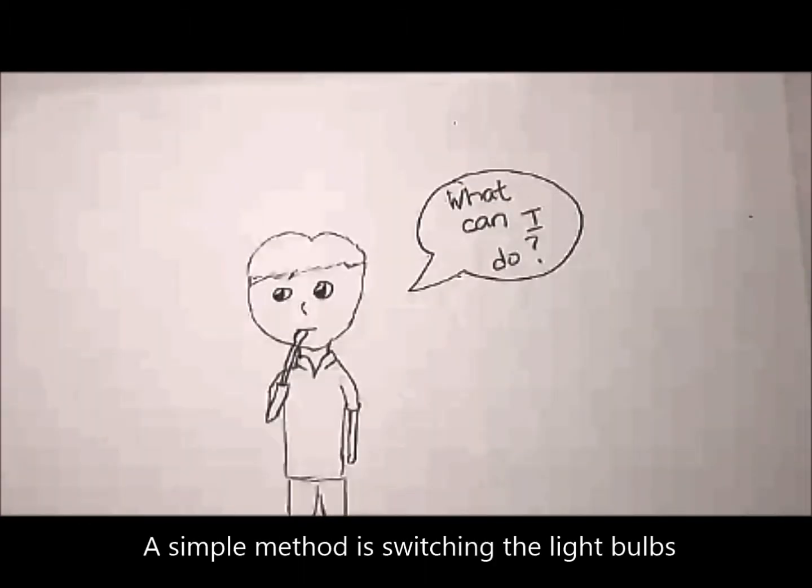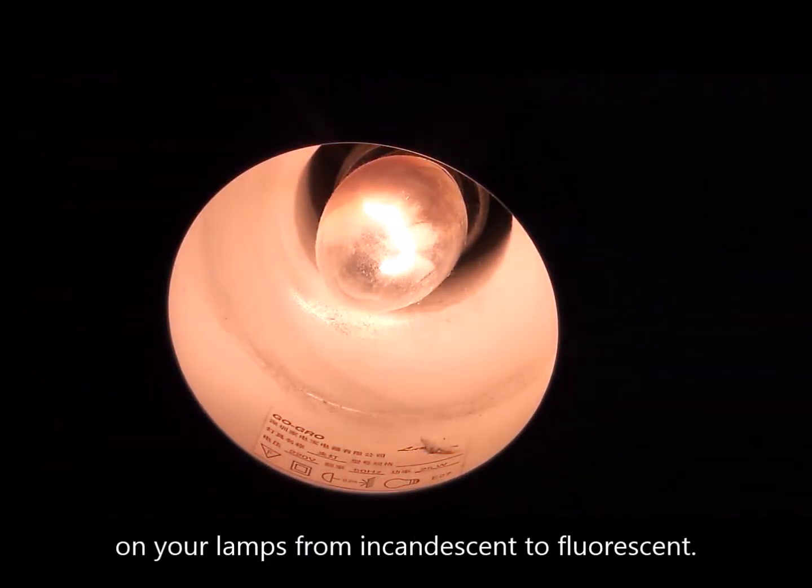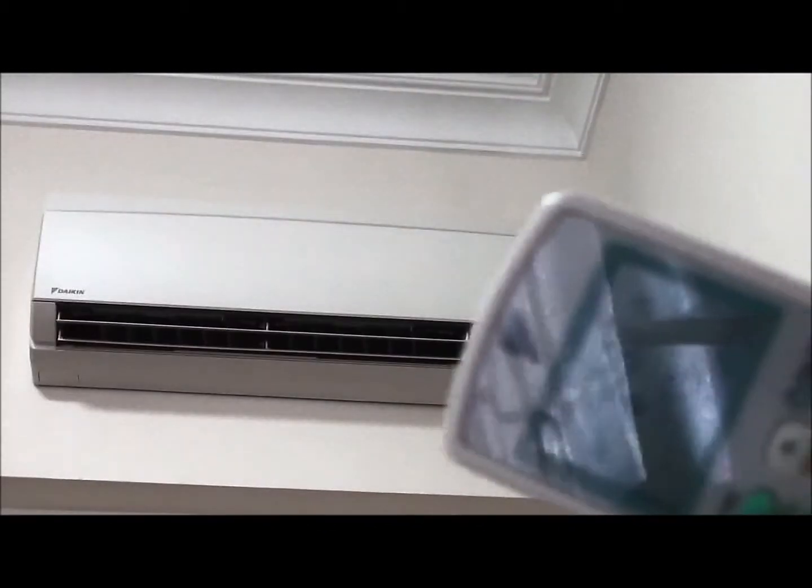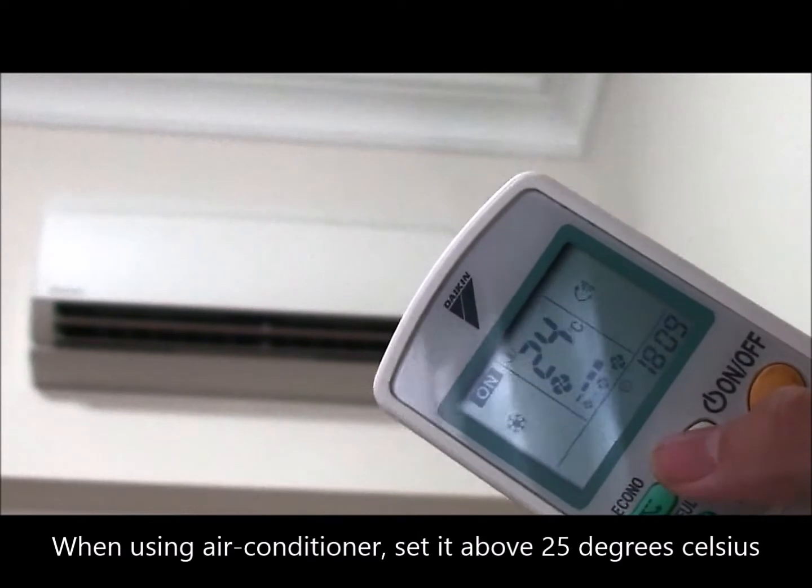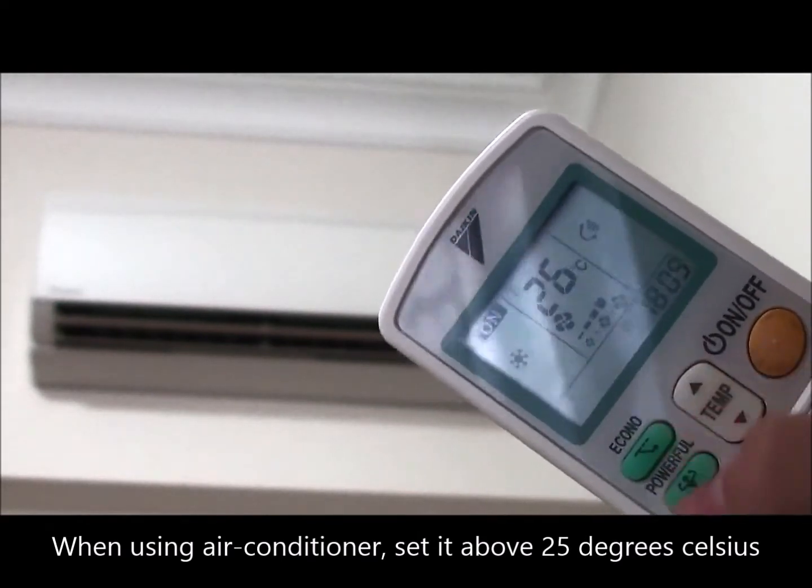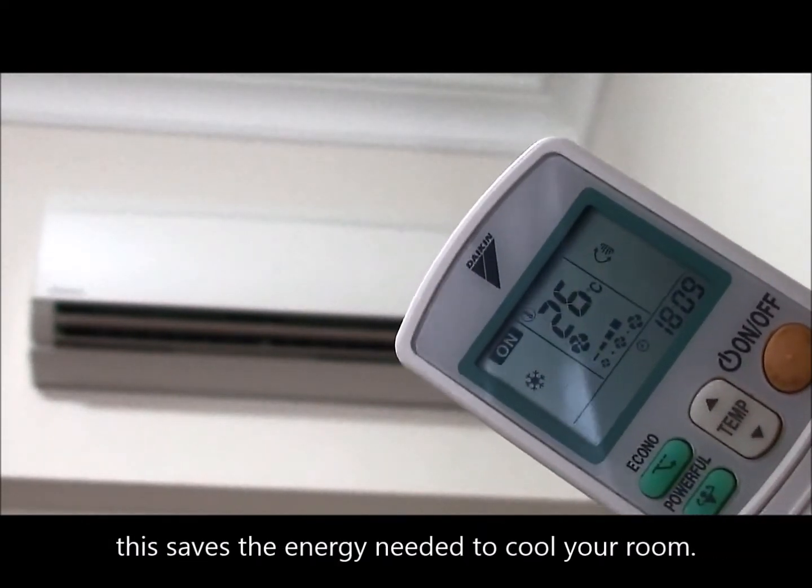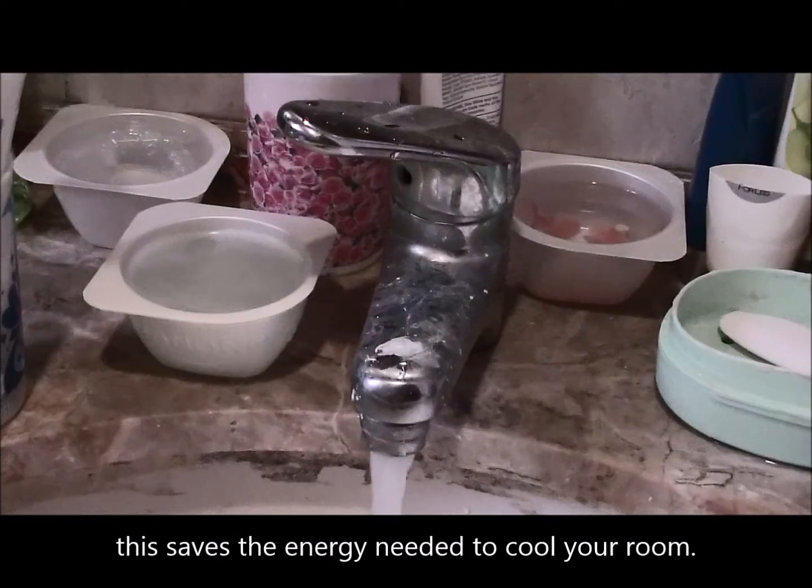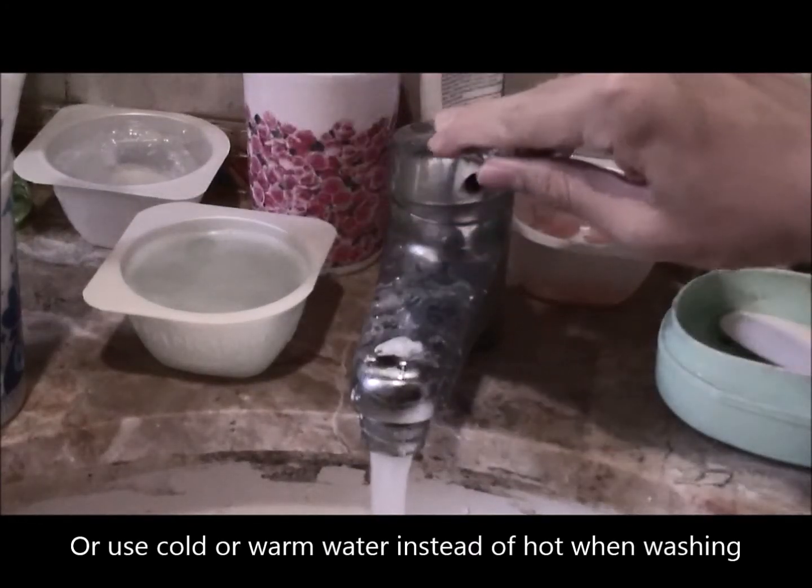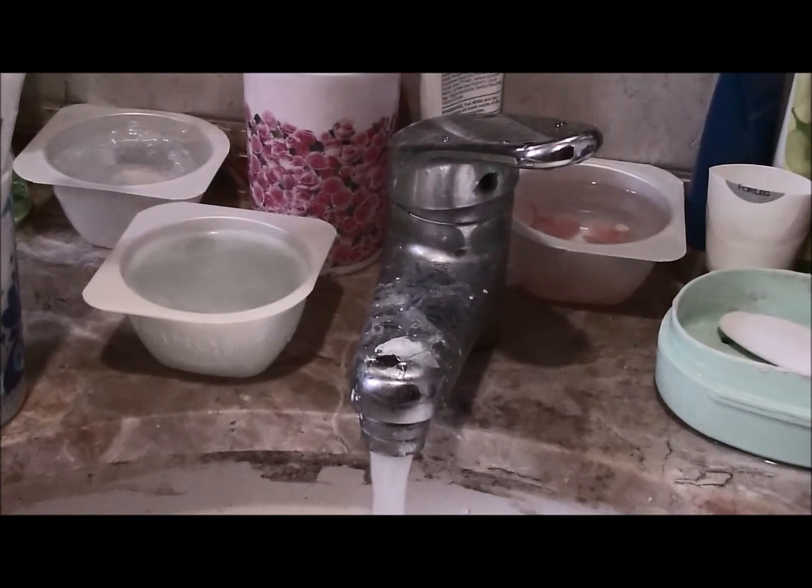So what can you do? A simple method is switching the light bulbs on your lamps from incandescent to fluorescent. When using the air conditioner, set it above 25 degrees Celsius. This saves the energy needed to cool your room, or use cold or warm water instead of hot when washing.